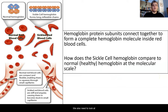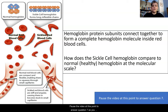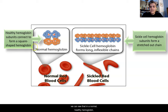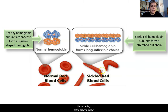We also need to look at how the shape compares at the molecular scale. In normal healthy hemoglobin, the subunits connect and form a square-shaped protein. In the sickle cell hemoglobin subunit, a chain starts to form that becomes long and inflexible — a rigid chain — which is what causes the red blood cell to get that sickle shape, as seen in the rendering below. Pause the video to answer question seven.